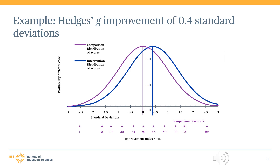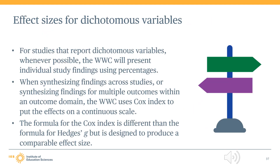See Appendix E of the WWC Procedures and Standards Handbook for more guidance on how the WWC calculates the improvement index. For dichotomous variables, which are variables that have only two possible categories, the WWC uses a version of the Cox index to calculate an effect size. Dichotomous variables include variables such as graduating or not, passing or failing a test, enrolling or not enrolling in a course, or any other variable that has two possible categories.